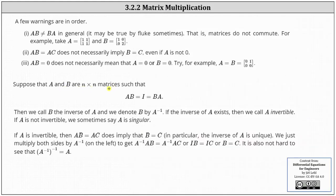Let's suppose that A and B are n by n square matrices such that A times B is equal to the n by n identity matrix, which is also equal to B times A. Then we call B the inverse of A, and we denote B as A inverse. If the inverse of A exists, then we call A invertible. If A is not invertible, meaning the inverse does not exist, we sometimes say A is singular. Finally, if A is invertible, then A times B equals A times C does imply that B equals C. In particular, the inverse of A is unique. We multiply both sides by A inverse: A inverse times A times B equals A inverse times A times C. Since A inverse times A equals I, we get I times B equals I times C, so B equals C. It's also true that the inverse of A inverse is equal to matrix A.